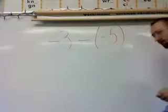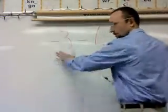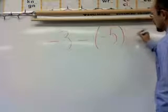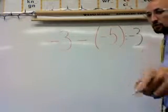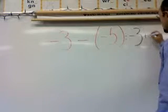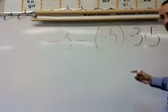Well, first step is to rewrite it. My integer on the left will always stay the same. So this is rewritten as negative three. And I want to add the opposite of negative five, which is just five.